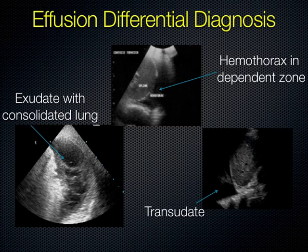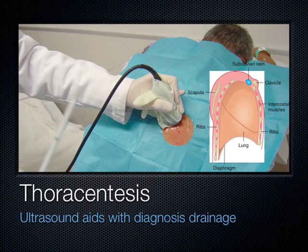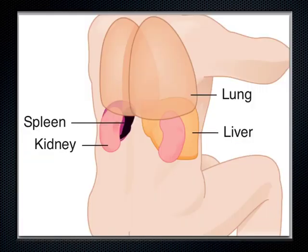We also use the probe in real time with a sterile glove or sterile cover to guide procedures. Many times people will just mark it with an X and then reposition the patient and hope for the best. But if you've got the ultrasound available, it's best to use it in real time — you can actually see the needle going into the fluid, knowing to stop pushing, given how close vital organs are to where you're putting a large-bore needle.